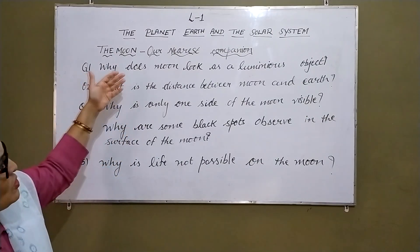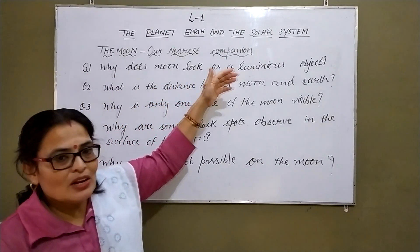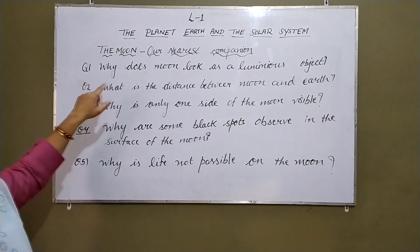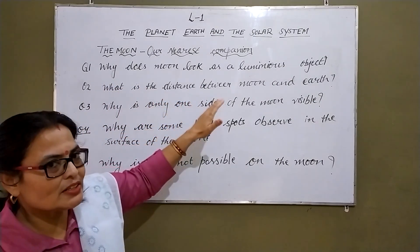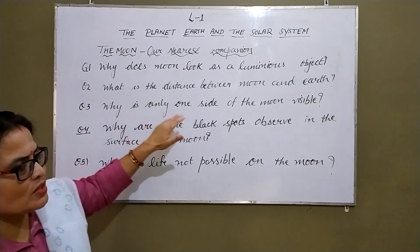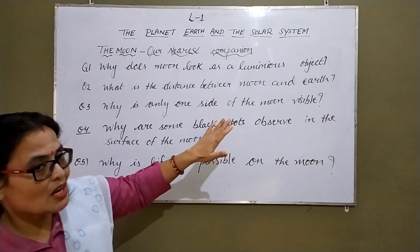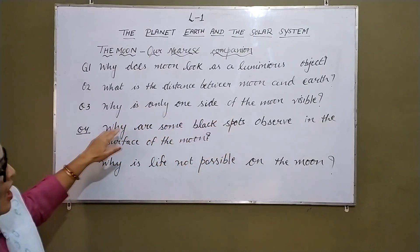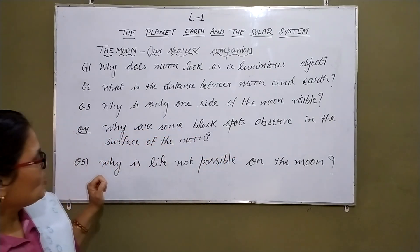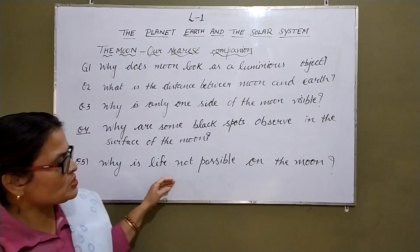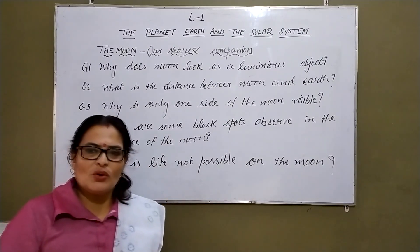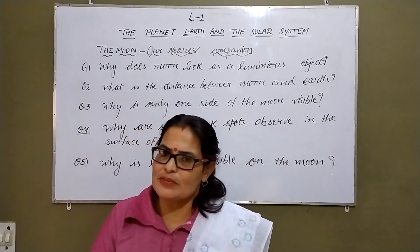Why does the moon look as a luminous object? What is the distance between the moon and the Earth? Why is only one side of the moon visible? Why are some black spots observed on the surface of the moon? Why is life not possible on the moon? If you are facing problems with these questions, you can ask me.